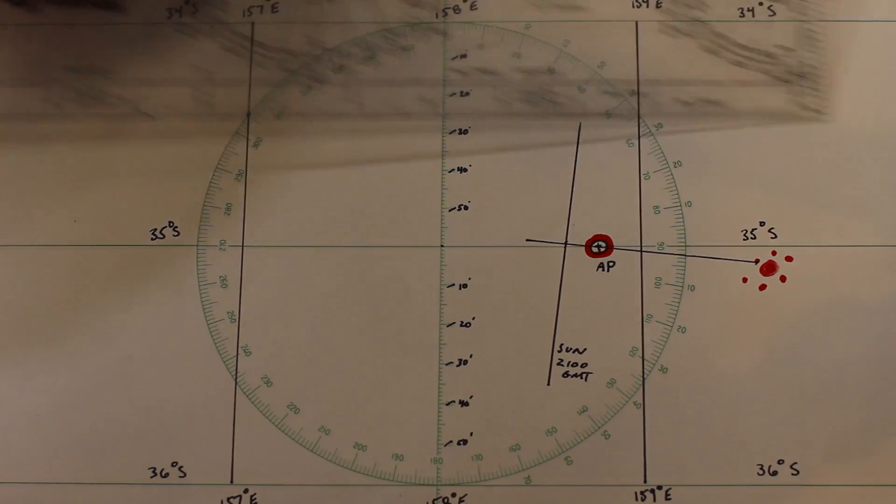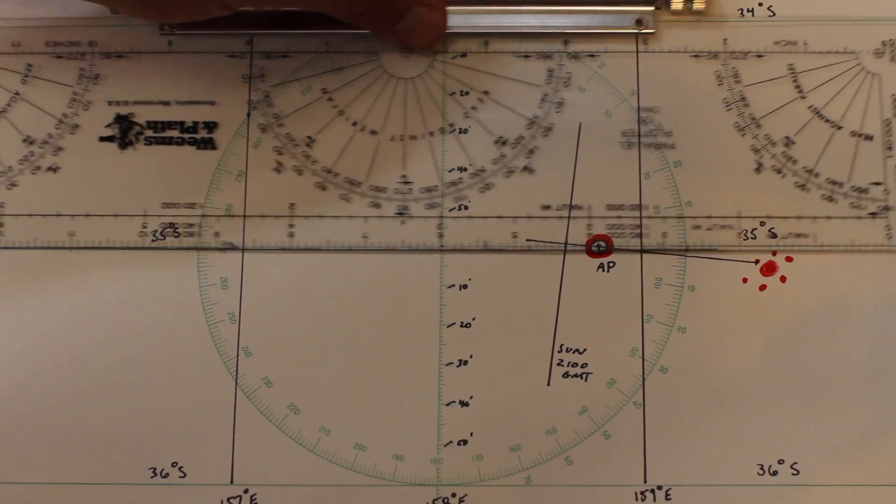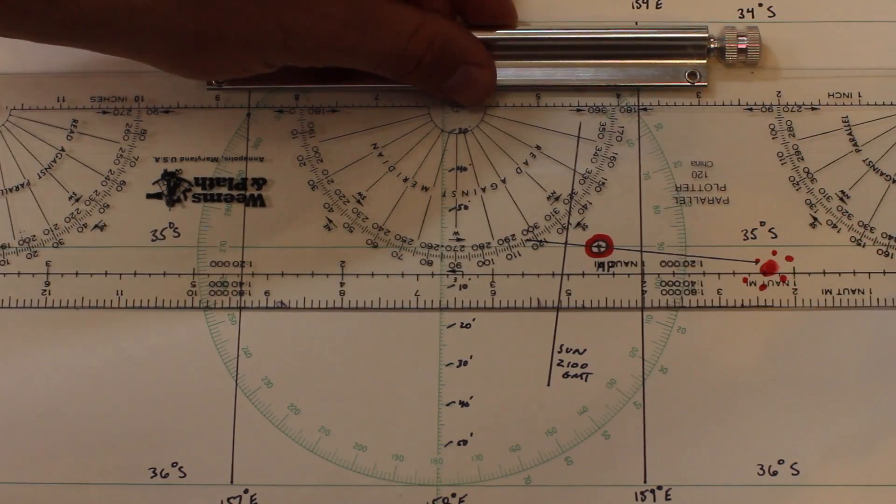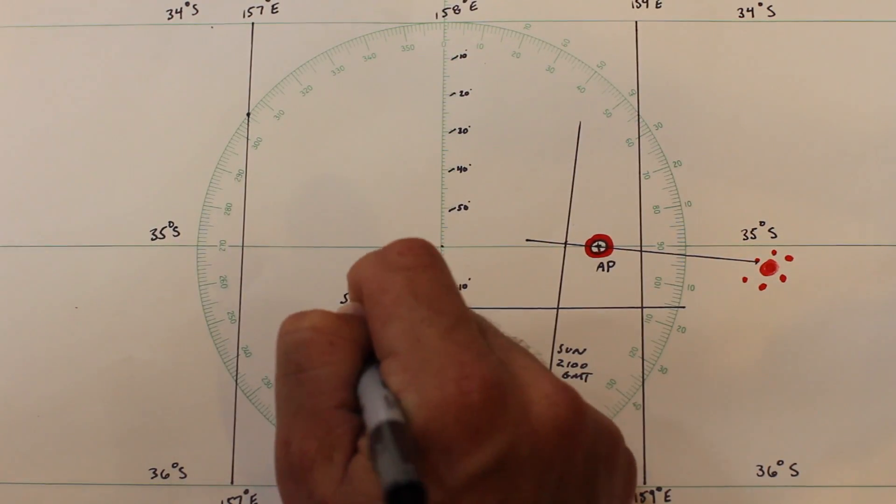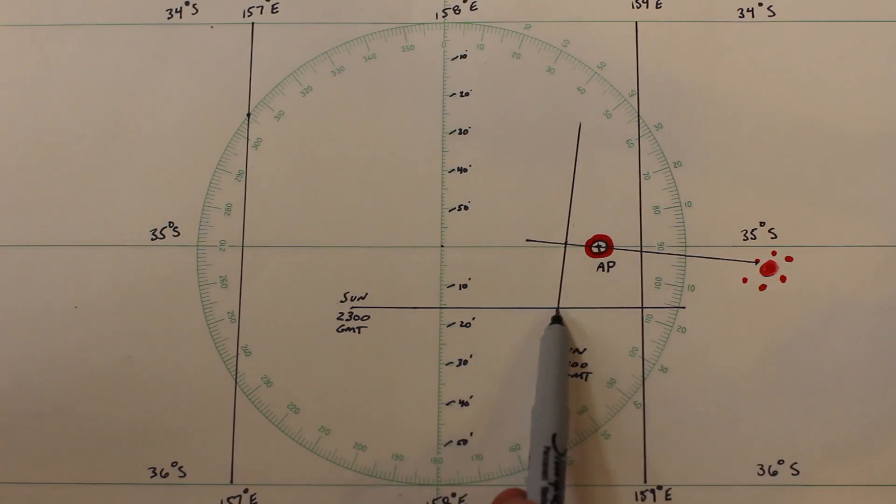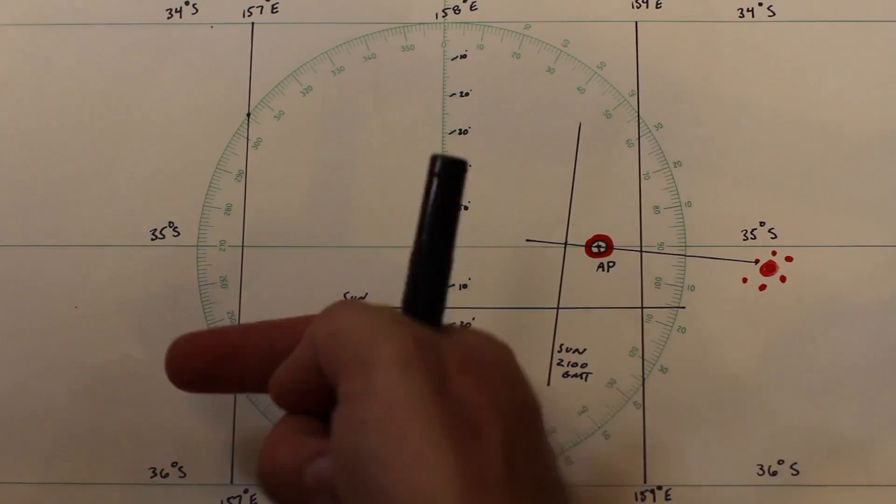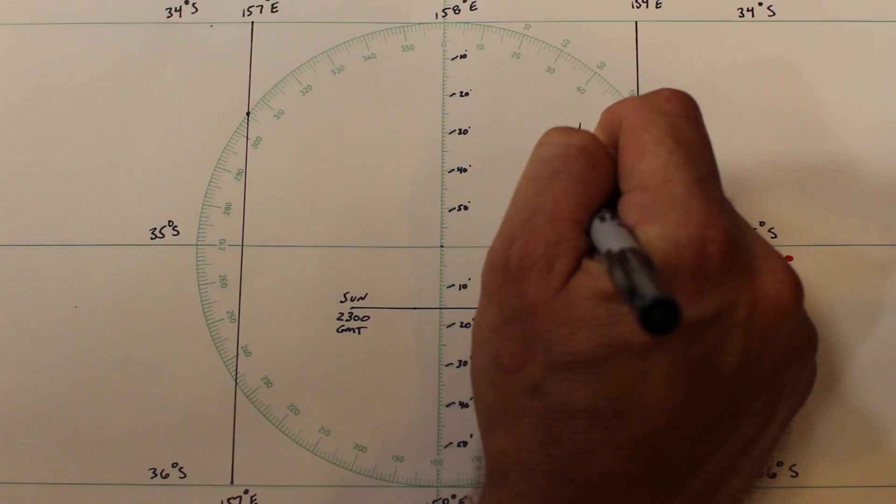Let's plot our latitude, which is straightforward enough. Now it's time to advance the morning sun line to the time of the noon site and fix our position, being careful to label everything properly.